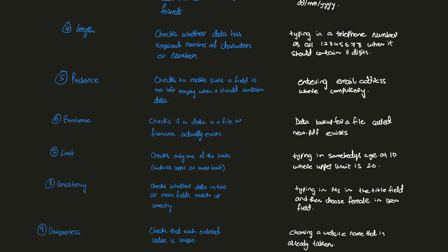Then we have consistency check. It checks whether data in two or more fields match up correctly. For example, if you select the title 'Miss' and then select gender as 'Male', that would not be consistent because 'Miss' is traditionally used for females. If you choose 'Miss' and 'Female' it passes the check, but choosing 'Miss' and 'Male' is inconsistent and would fail a consistency check if one is in place.